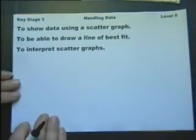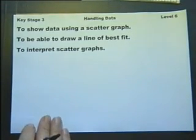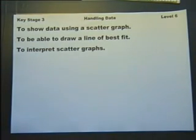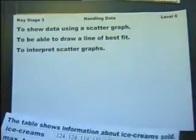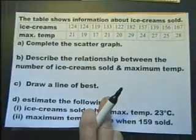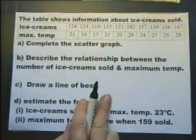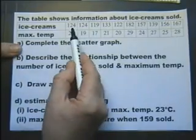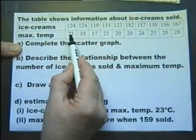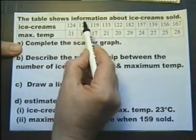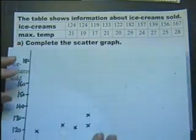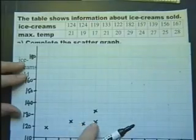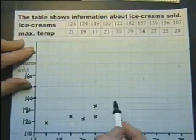We need to be able to show data using a scatter graph to be able to draw a line of best fit and to be able to interpret scatter graph. So here we go. The table shows information about ice cream sold. So there's the number of ice cream sold and the maximum temperature on that particular day. Complete the scatter graph. So the first, 1, 2, 3, 4, 5. Now we've continued to plot the rest of the points.